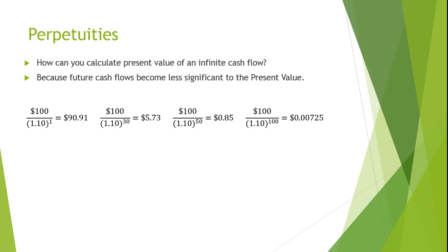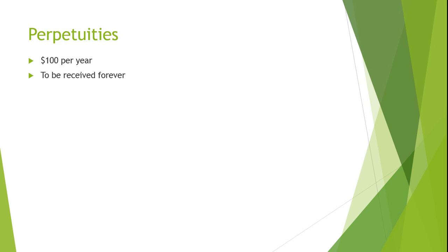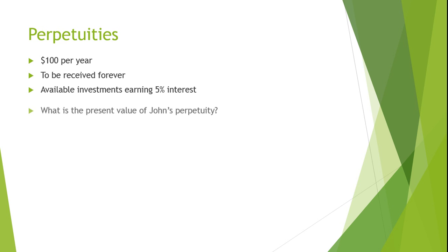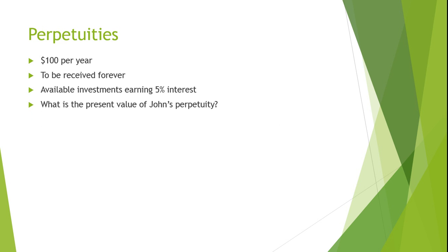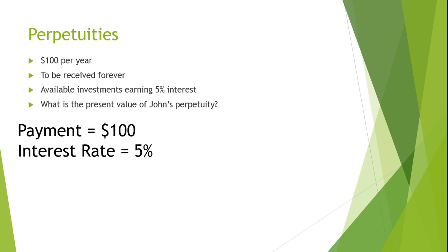Let's try an example. John is to receive $100 a year for the rest of his life. There are other low-risk investments available that could earn a rate of 5% per year. What is the present value of John's perpetuity?